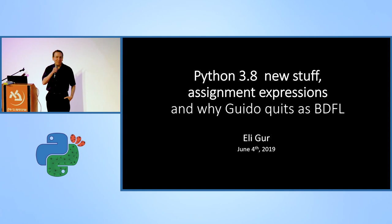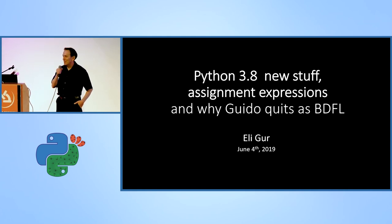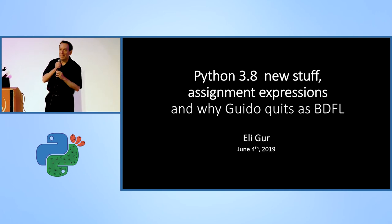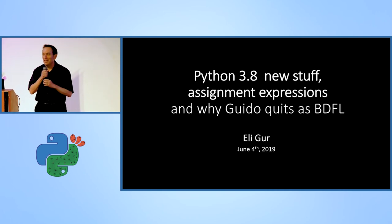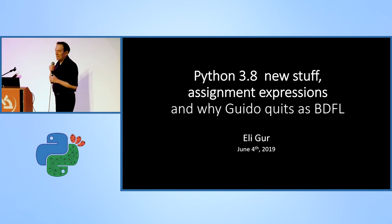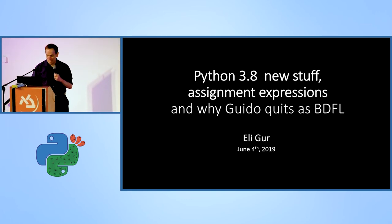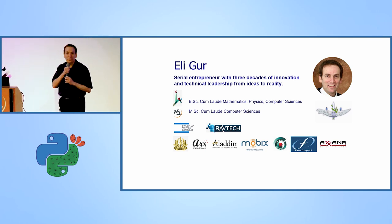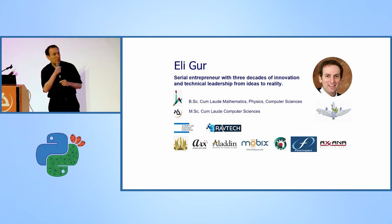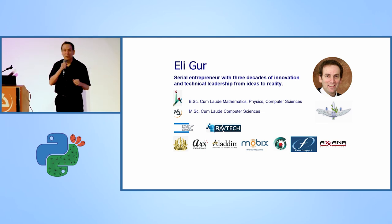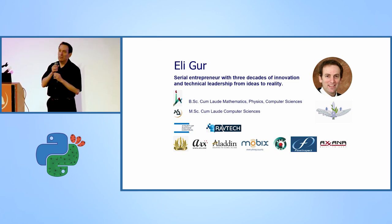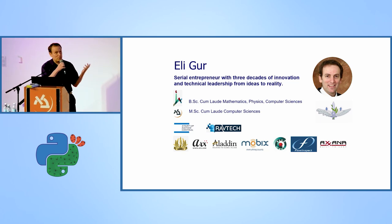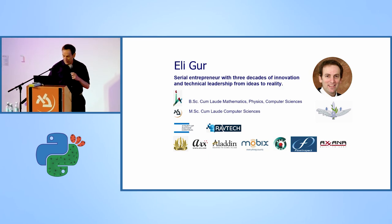Okay everyone, I'm glad to see so many people and familiar faces. So I guess most of you came to understand what's going on with Guido, but I'll be talking on Python 3.8, the new stuff in it, obviously the assignment expression. For those who don't know me, I'm a serial entrepreneur involved in educational projects for diversity populations — Arabs and ultra-religious people, Haredim in Hebrew — integrating them into high-tech companies and the software industry. I've been doing Python for over 20 years and am very active within the community.